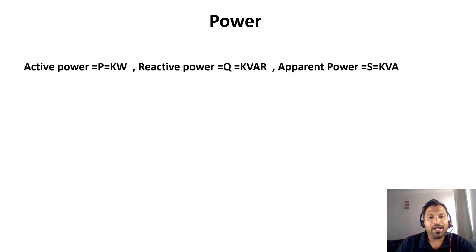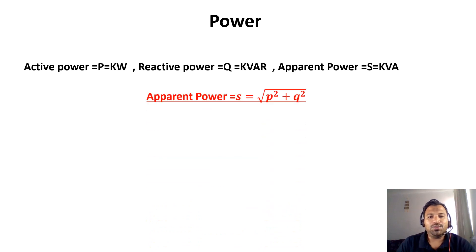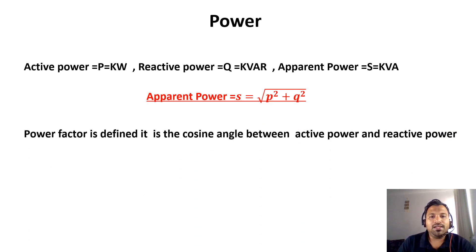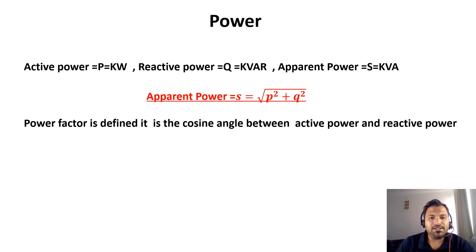Let's see some basic elements in power. We have active power, reactive power, and apparent power. Active power is represented in kilowatts, reactive power in kVAR, and apparent power in kVA. Apparent power S equals the square root of P-squared plus Q-squared. Power factor is the cosine of the angle between active power and reactive power, represented as cos φ, which equals kilowatts divided by kVA.